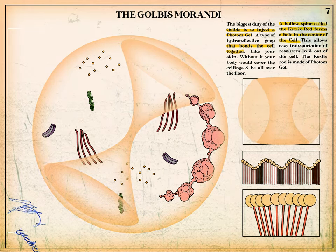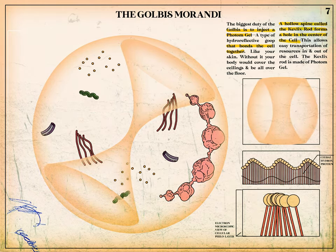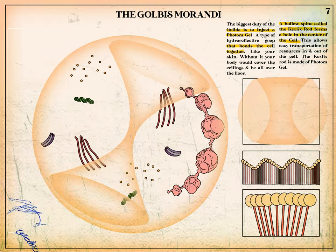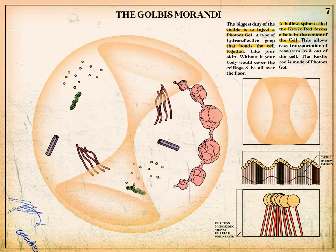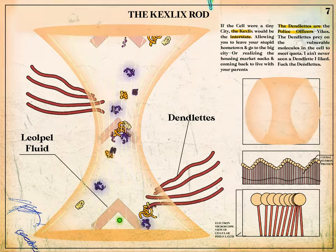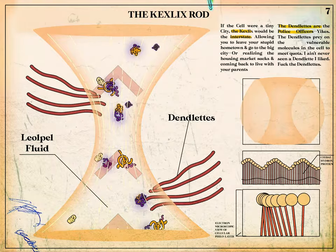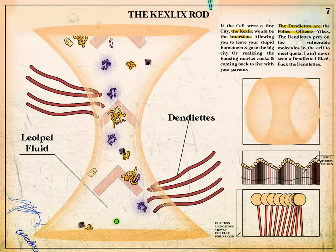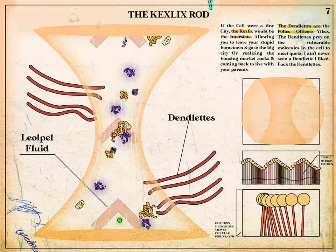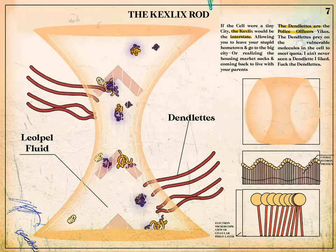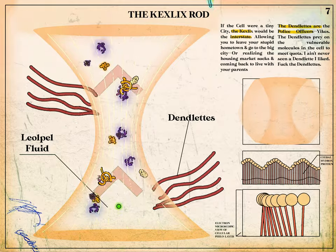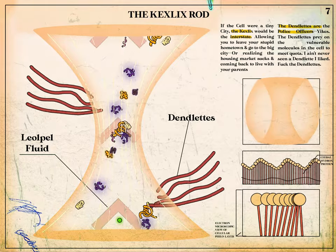The Kexlex rod forms a hollow spine that runs the length of the cell. It acts as a mouth and anus. Dendlets, also known as baby fingers, are small tendrils that can pass through the thin Kexlex membrane. The dendlets scrape at the exterior leopal fluid, draining it into the flumquous dexter.